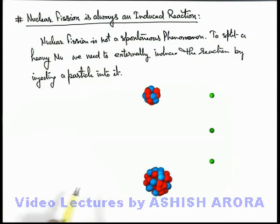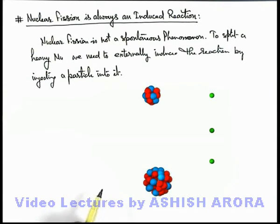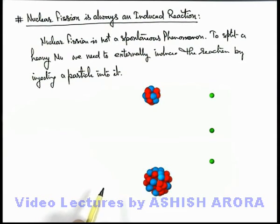So this is the way how a fission reaction is induced. A nucleus never spontaneously disintegrates into 2 or more elements; it is always done by injection of an external particle, like we have seen here in this situation.